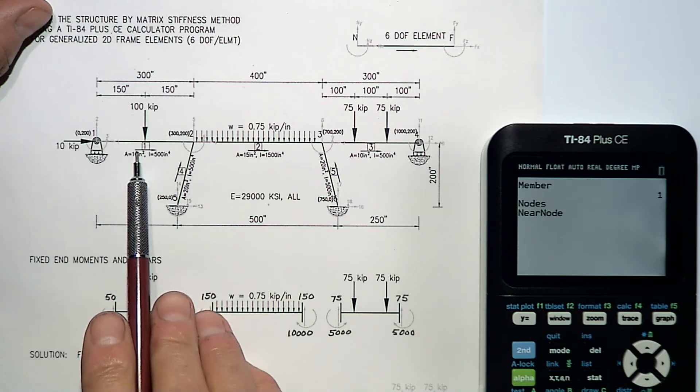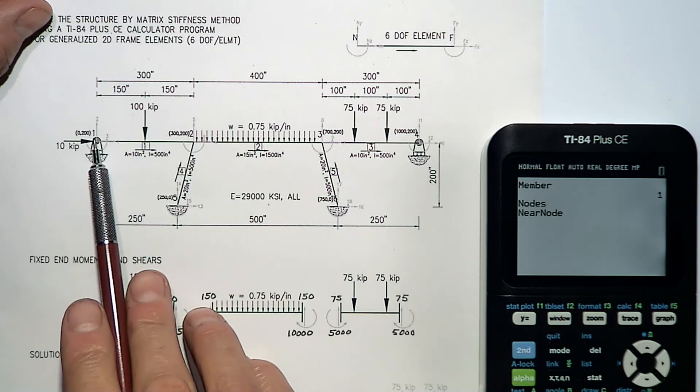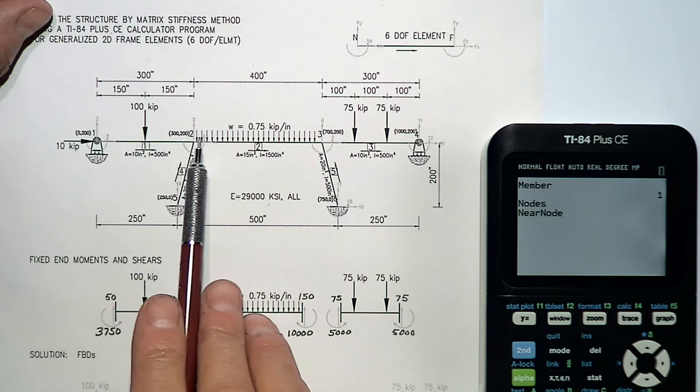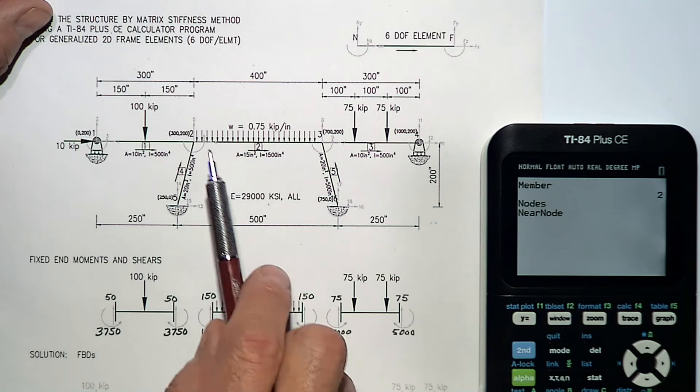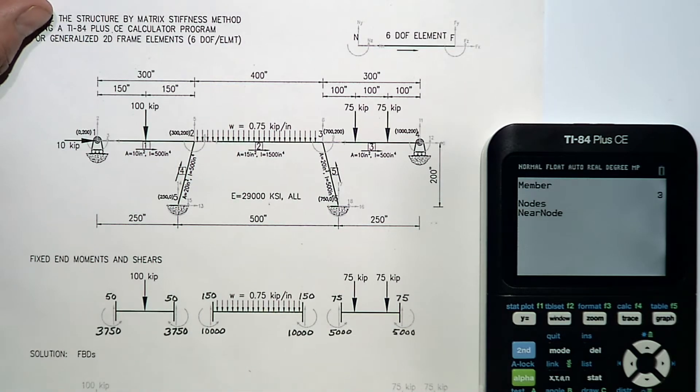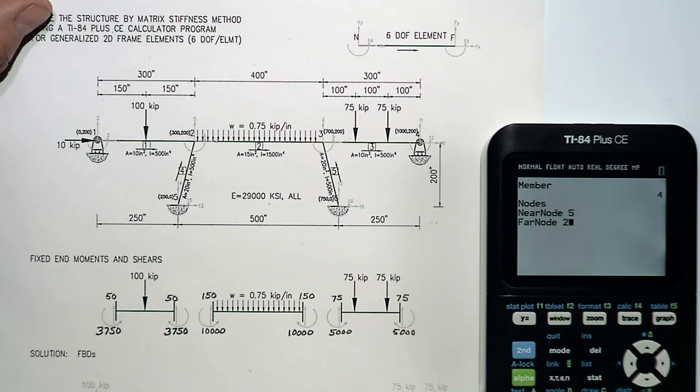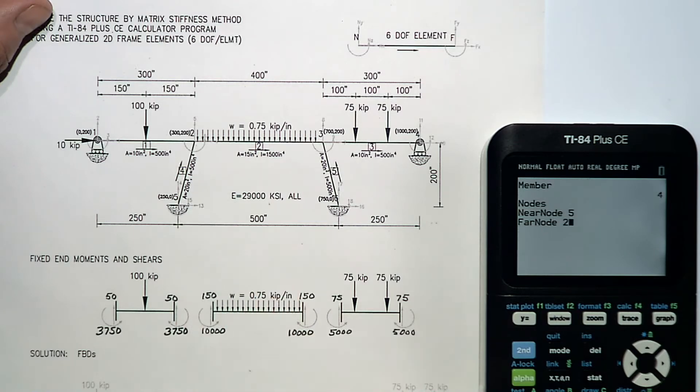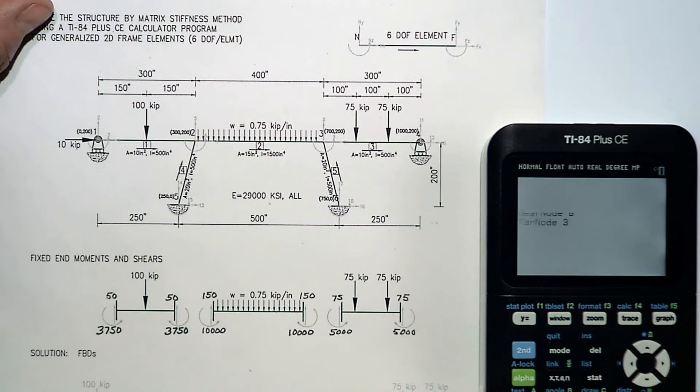Now we'll deal with connectivity. My arrows indicate my intended near to far direction. Member one goes from node one to node two. Member two goes from two to three. Member three goes from three to four. Member four goes from five to two. And member five goes from six to three.